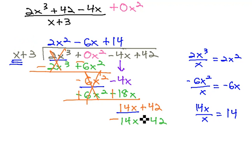Now, changing the sign on both, we'll notice the 14x subtract out, and the 42 subtract out, leaving 0.